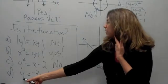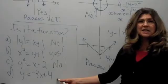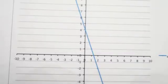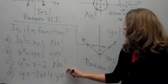And what about equation D? y equals 3x plus 4. This is just a slanted line. This is the graph of y equals negative 3x plus 4. So it is going to pass the vertical line test and be a function.